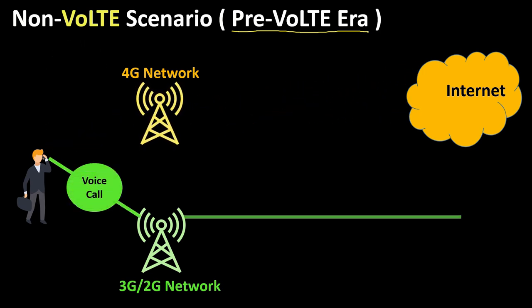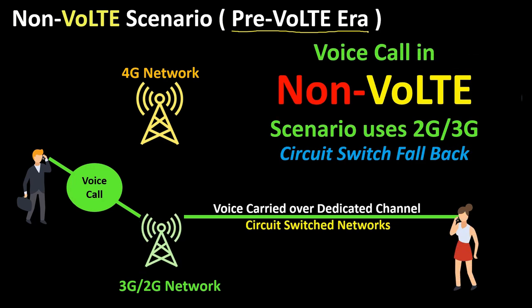Since 4G cannot carry voice traffic, this is a big problem for everyone. Circuit switch fallback, also known as CSAB, helped operators here. While the 4G or LTE network is used for internet and data connectivity, the user is thrown to the underlying 3G or 2G network for voice calls. Existing 2G and 3G mobile systems use circuit switching to carry voice traffic — circuit switching is basically a dedicated end-to-end channel or circuit established to carry voice traffic for the entire duration of the call.